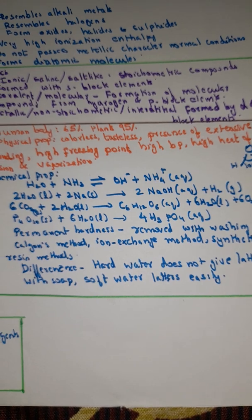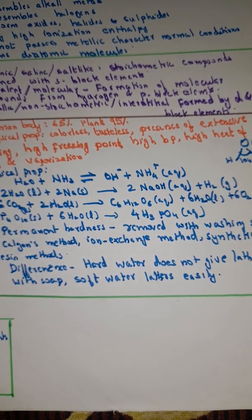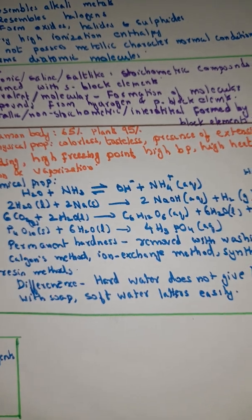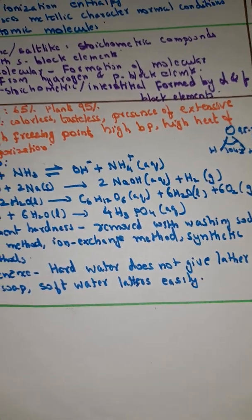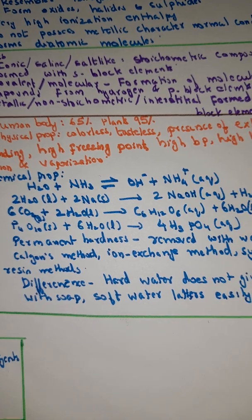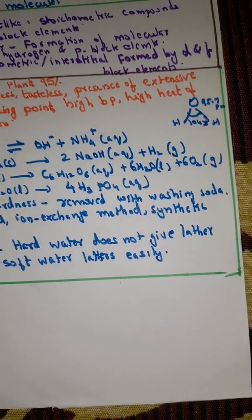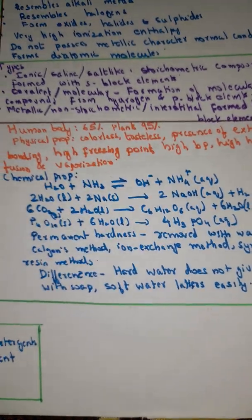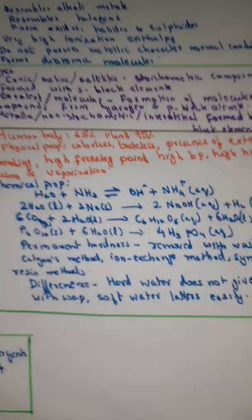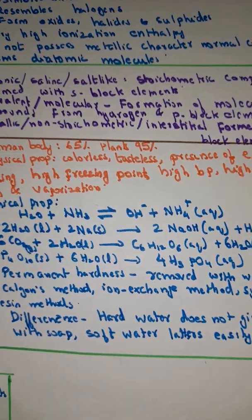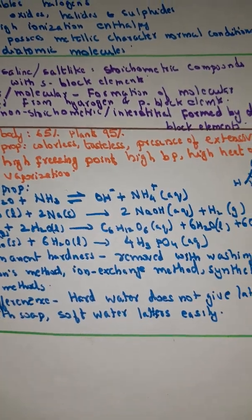Chemical properties are also given. You can write down all the equations or take a screenshot. H2O + NH3 gives OH⁻ + NH4⁺. 2H2O + 2Na gives 2NaOH + H2. 6CO2 + 12H2O gives C6H12O6 + 6H2O + 6O2. P4O10 + 6H2O gives 4H3PO4.